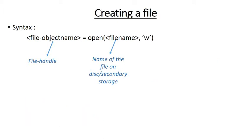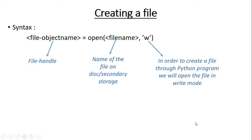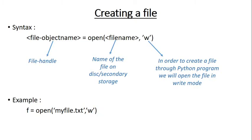Creating a file uses the same syntax as opening a file: file_handle = open(file_name, mode), but here the mode is 'w' for write. When we open a file in write mode and the file is not available on disk, it gets created automatically. Here is an example: this statement is going to create a file called myfile.txt in the current directory.